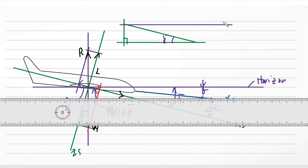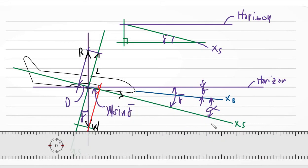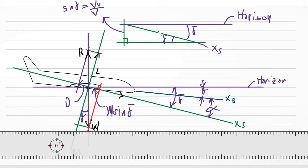The horizon is established, and from x-sub-s to the horizon we have gamma-bar. So the angle between the velocity vector and the horizon is also gamma-bar. Using the sine function — since the vertical component is the opposite side and v is the hypotenuse — sine gamma-bar equals the vertical component over v. Therefore, the vertical component equals v sine gamma-bar.